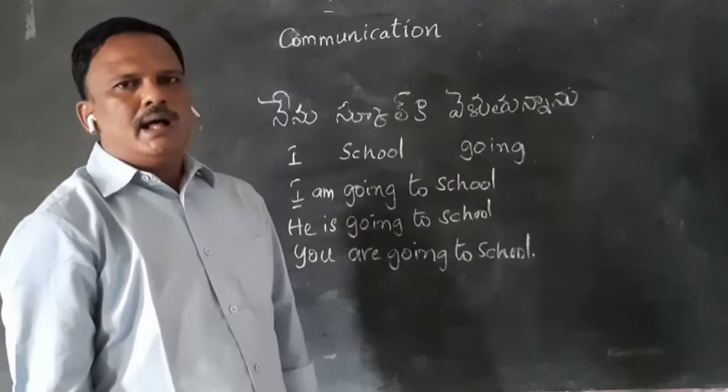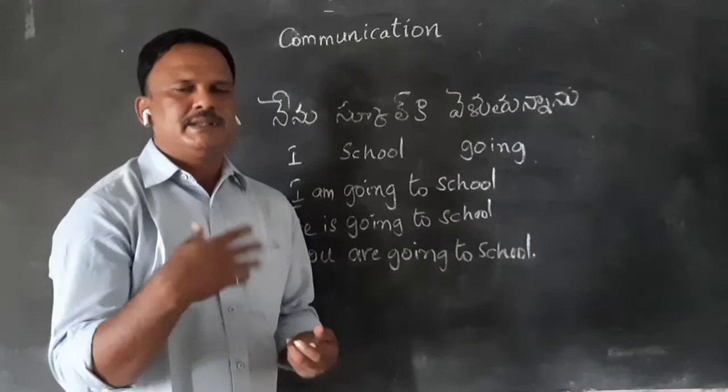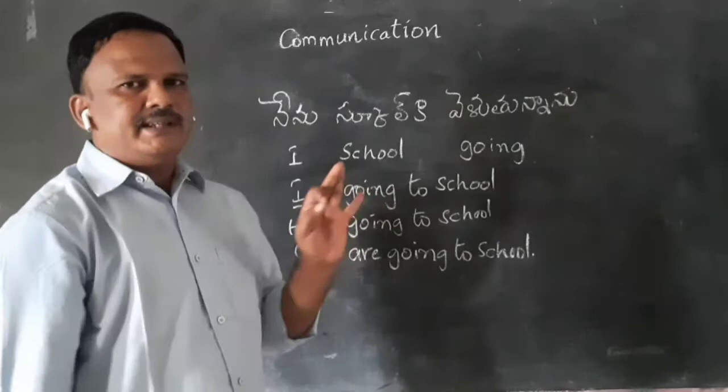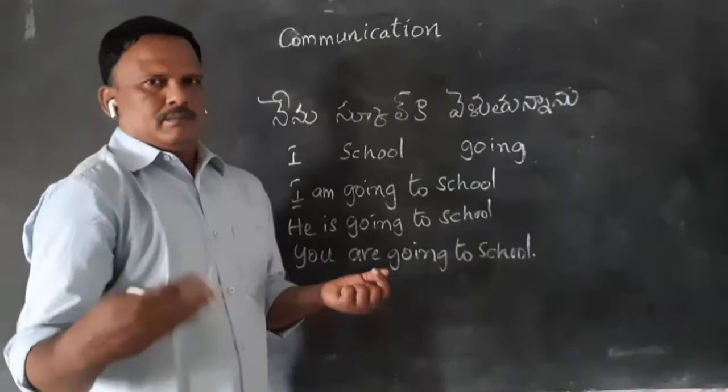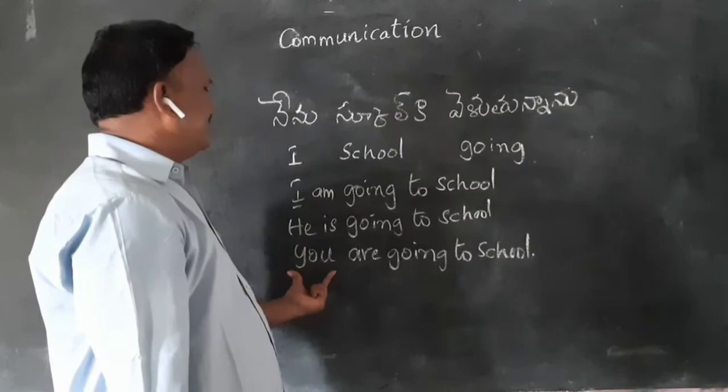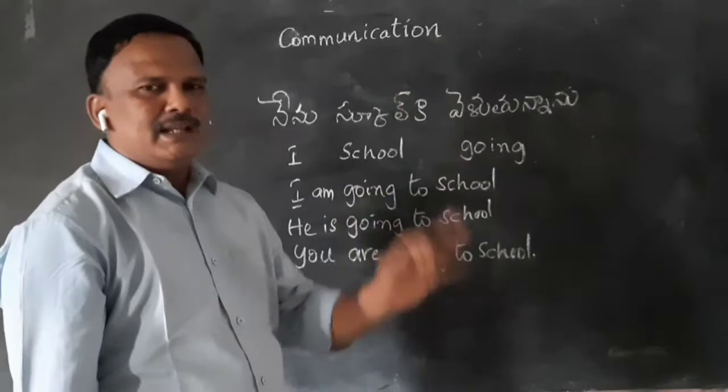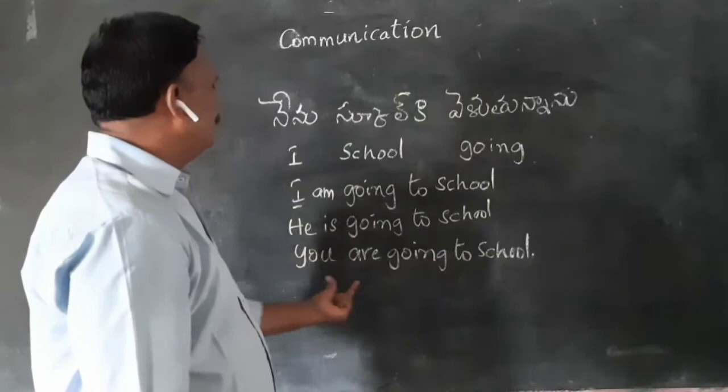So we have to use 'am', 'is', and 'are' in our speaking. When the subject is 'I', we have to use 'am'. When the subject is third person — he, she, it — we have to use 'is' as a helping word. And 'you' is the single word used for both second person singular and second person plural, so we have to use 'are': 'You are going to school.' These are all in present tense.